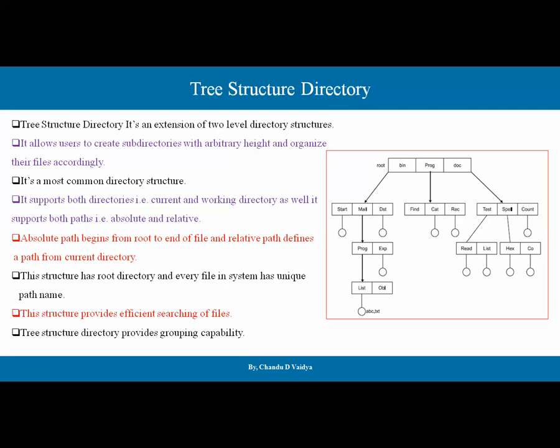There is both absolute and relative path support, as well as current and working directory support. The current directory is the one you are actively working in — for example, working on abc.text in a particular working directory such as list, with the current directory being proc. In this structure, the naming problem of files is totally solved, which had not been solved at the two-level directory structure.